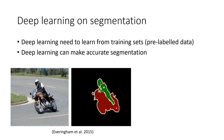Deep learning is a new subfield of machine learning. The key feature is that it can make accurate predictions on images. A well-trained deep learning model can segment images accurately. This example shows deep learning doing an amazing job segmenting a human, motorcycle, and background.